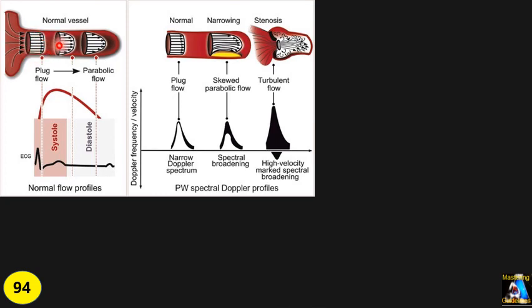We have two types of laminar flow: plug and parabolic. Plug flow occurs at the beginning of the LVOT and larger arteries like the beginning of the aorta and pulmonary artery. In plug flow, the velocity from the side to the center is almost equal throughout the vessel. In parabolic flow, the velocity at the center is highest and decreases gradually toward the wall, but blood flow is still in parallel layers.